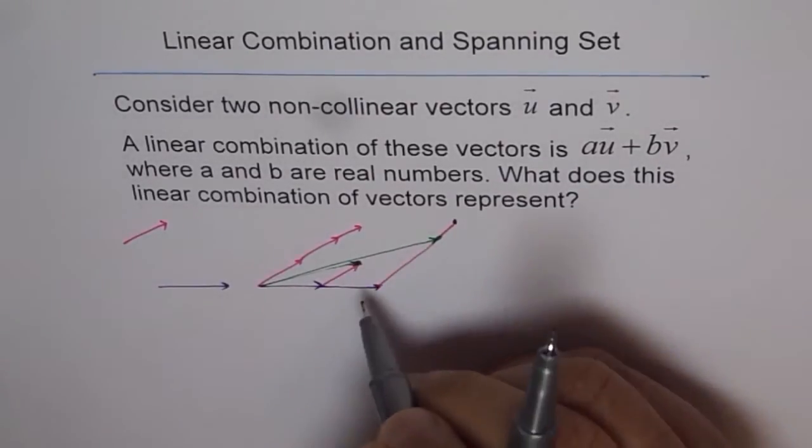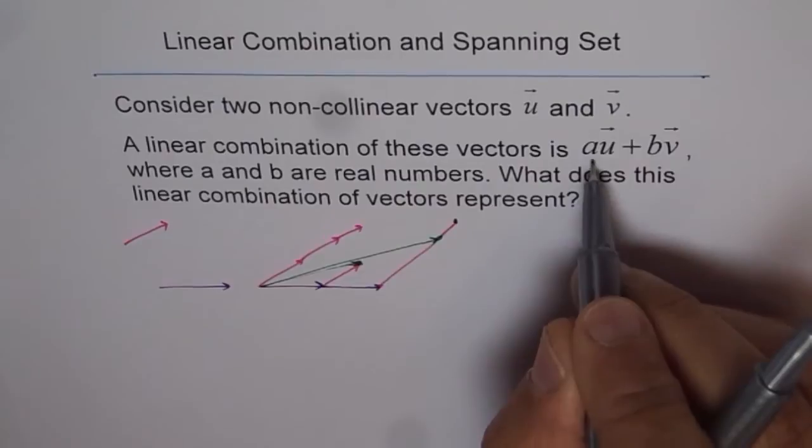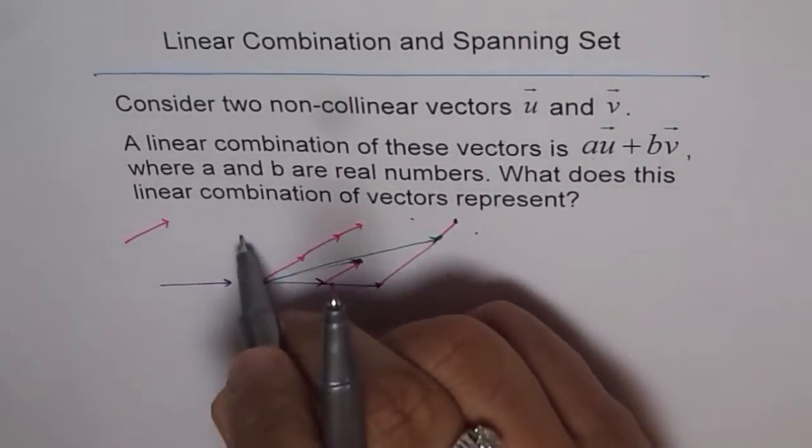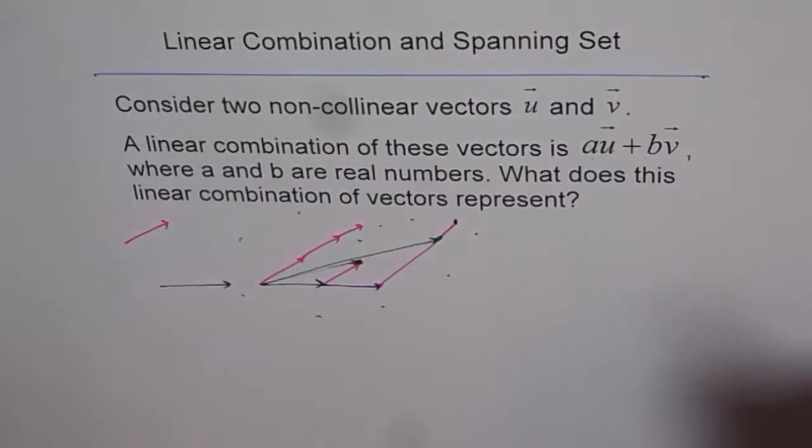So what we see is, with linear combinations, different values of a and b, we can actually represent all different points on this plane.